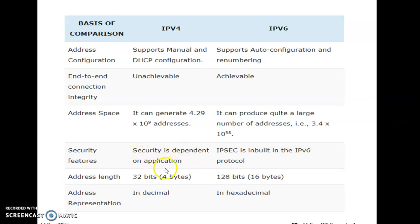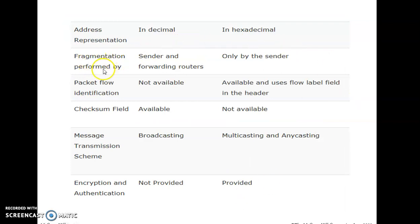IPv6 provides inbuilt security with the help of IPsec — IP Security. The address length is 32 bits comprising 4 bytes for IPv4, and 128 bits comprising 16 bytes for IPv6. Regarding notation, IPv4 addresses are denoted in dotted decimal fashion, while IPv6 addresses are denoted in hexadecimal colon fashion. Regarding fragmentation — the breaking down of packets into smaller parts to satisfy the MTU (Maximum Transmission Unit) of the physical network — in IPv4, fragmentation is done at the sender and forwarding routers.